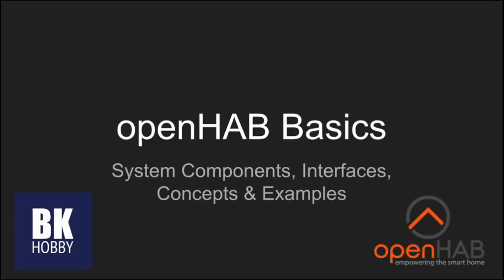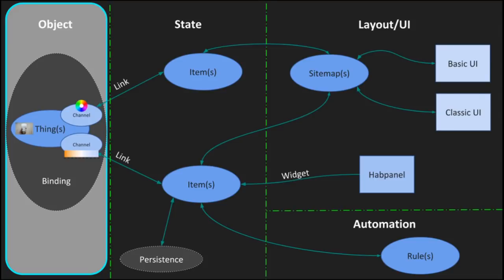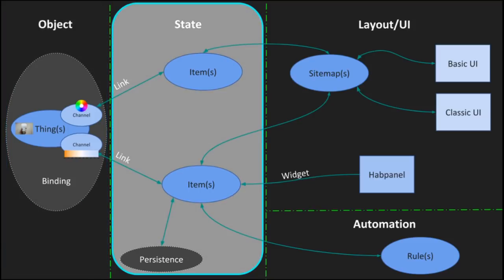Hi, you're watching BK Hobby, and welcome back to the OpenHAB basic series. In the last video, I showed you what things, channels, and bindings mean in the OpenHAB configuration. We also directly interacted with the thing objects through the Paper UI. In this video, I'll show you the next and probably the most important building block of the OpenHAB configuration: the item.